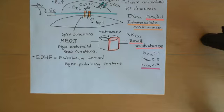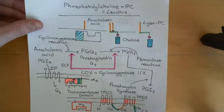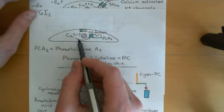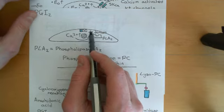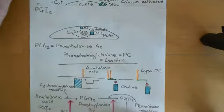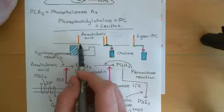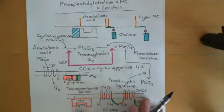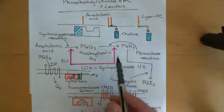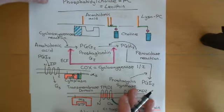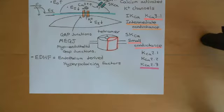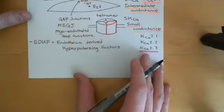Epoxy-eicosatrienoic acids are produced from arachidonic acid. In the endothelial cells with these calcium signals, you get activation of phospholipase A2, which then translocates to underneath the phospholipid bilayer and starts breaking down phosphatidylcholine to liberate arachidonic acid. We've seen how arachidonic acid can be acted upon by cyclooxygenase enzymes to produce prostacyclin or prostaglandin I2, but arachidonic acid can also go down a completely different pathway, and it's this that we now want to study.